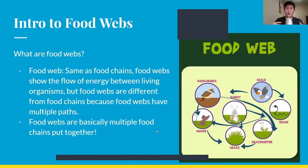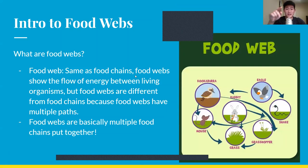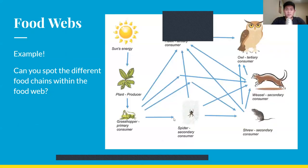Now we'll go to something a little more complex. Food chains are very simplified — it's just one line or one circle. But in real life, things are a lot more complicated, and that's where we go into food webs. Food webs are basically the same concept as food chains in that it's a flow of energy, but food webs show the flow of energy between living organisms through multiple paths — food webs are just a bunch of different food chains mashed together.